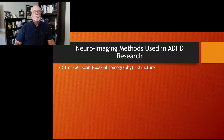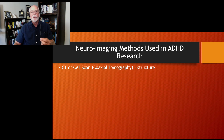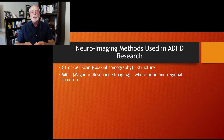Starting at the beginning, we had the old CAT or CT scans that took a look at the structure of the brain. These have gotten better over time, and the images are much better than they used to be back in the 70s when this method was first being used in research and practice. That was followed by the development of magnetic resonance imaging, which looked at brain structure using detection of magnetic differences in the brain.